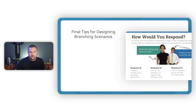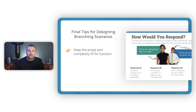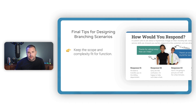Here are some final tips for designing branching scenarios. First, keep the scope and complexity fit for function — one of my favorite phrases. It means you're not designing something more complicated than what you actually need to achieve your desired goal. The opposite of fit for function is gold plating, where you're polishing something beyond the point of receiving an ROI. If you can achieve your desired outcome with a simple linear scenario-based experience, then do that. You don't have to create something overly complex if you don't need it.